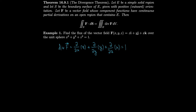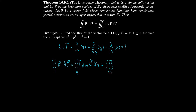The divergence theorem says our surface integral equals the triple integral of this divergence. So the surface integral f dot dS equals the triple integral over the unit ball B of the divergence, which is just integrating 1. When you see a triple integral of 1, you can just write it out as the volume of the ball. The volume of the unit sphere is (4/3)π times the radius cubed, which is (4/3)π(1)³.